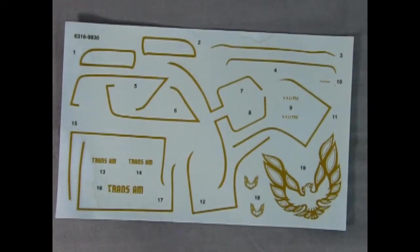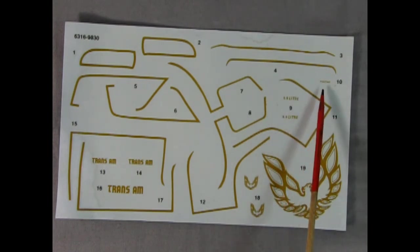Here is our decal sheet. I'll just remove the paper. There it is, all in gold with the nice Trans Am lettering here and here. And then there's the flaming fire chicken, or the firebird emblem, right there. Our 6.6 liter notifications, as well as a little Pontiac trim at the back.